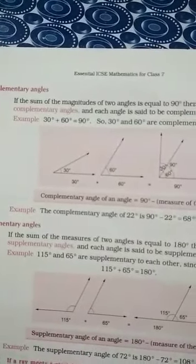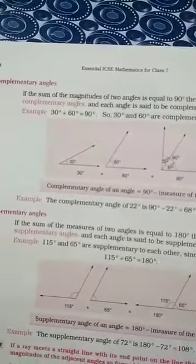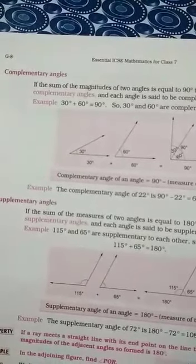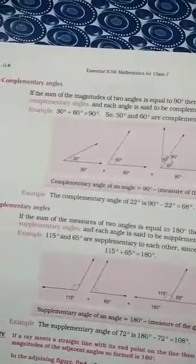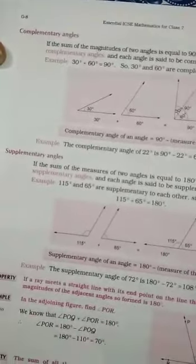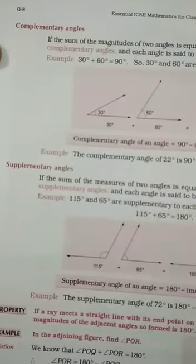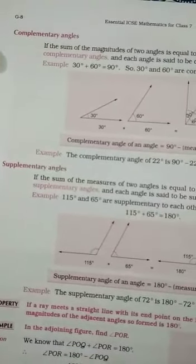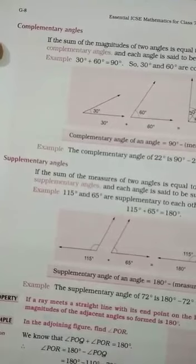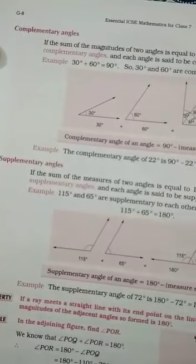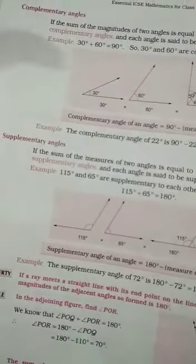Next, Complementary Angles. If the sum of the magnitudes of two angles is equal to 90 degree, then the angles are called Complementary Angles. Next, Supplementary Angles. If the sum of the measures of two angles is equal to 180 degree, then they are called Supplementary Angles. Keeping this in mind, let us start the exercise.